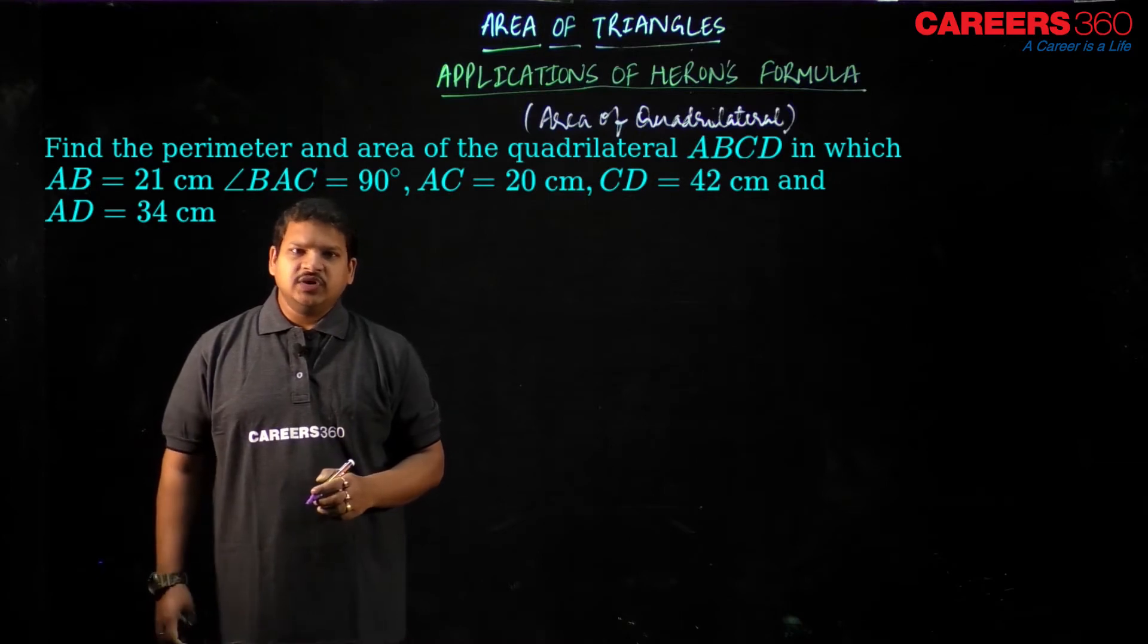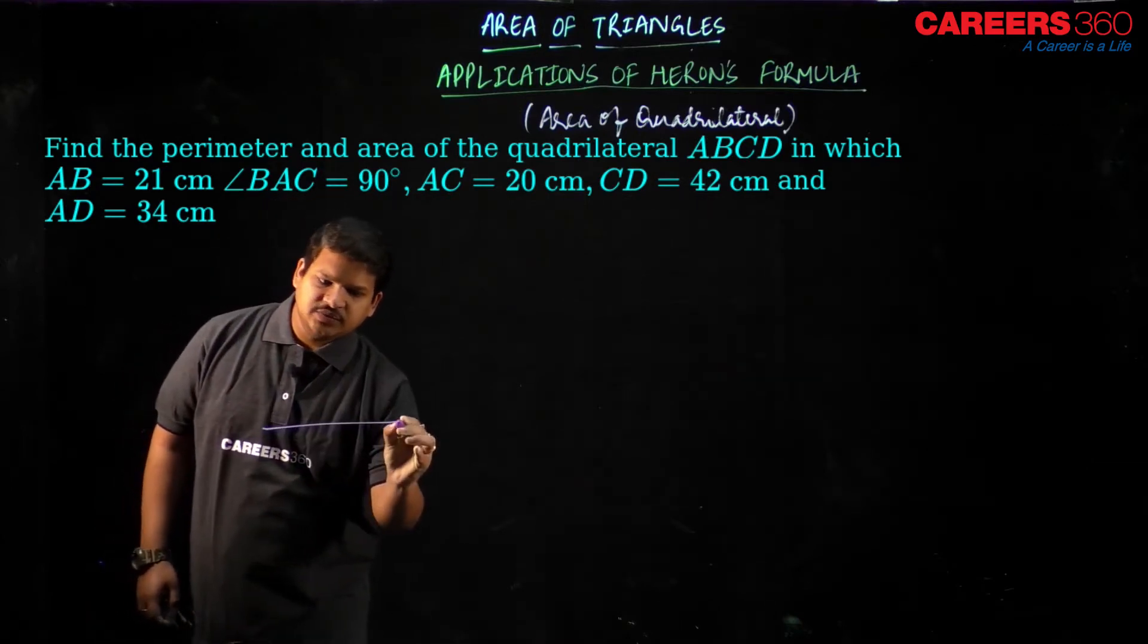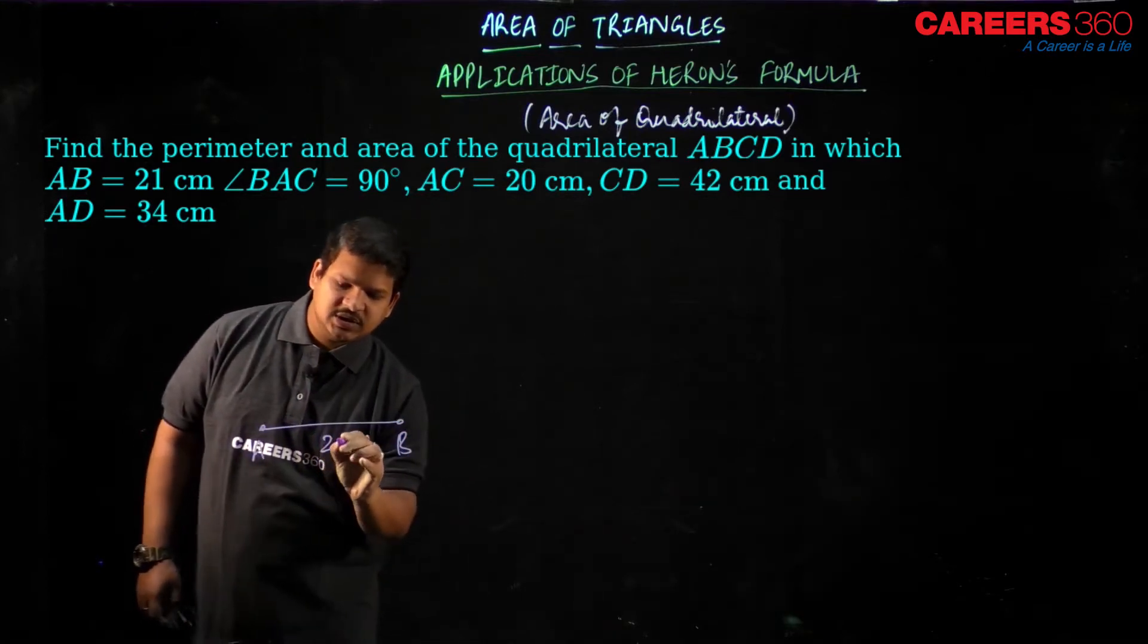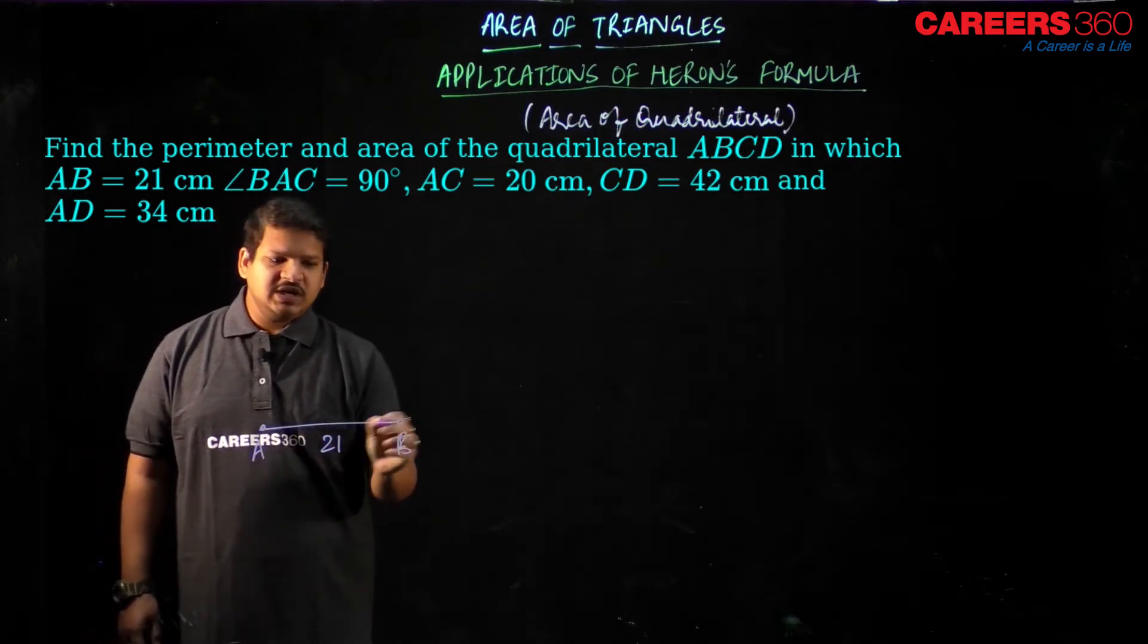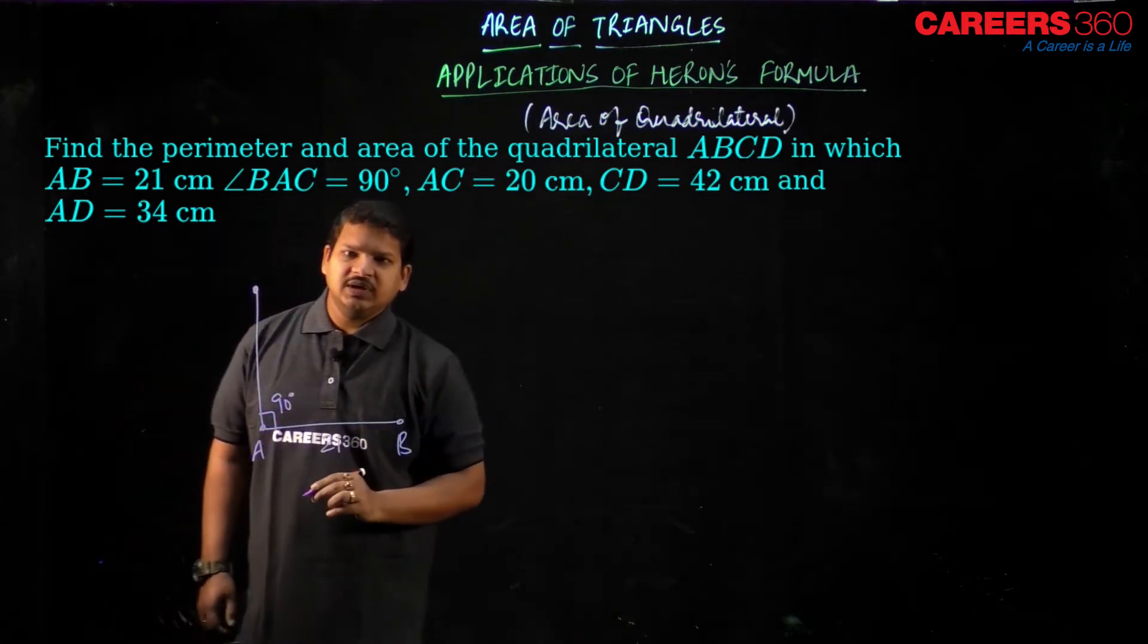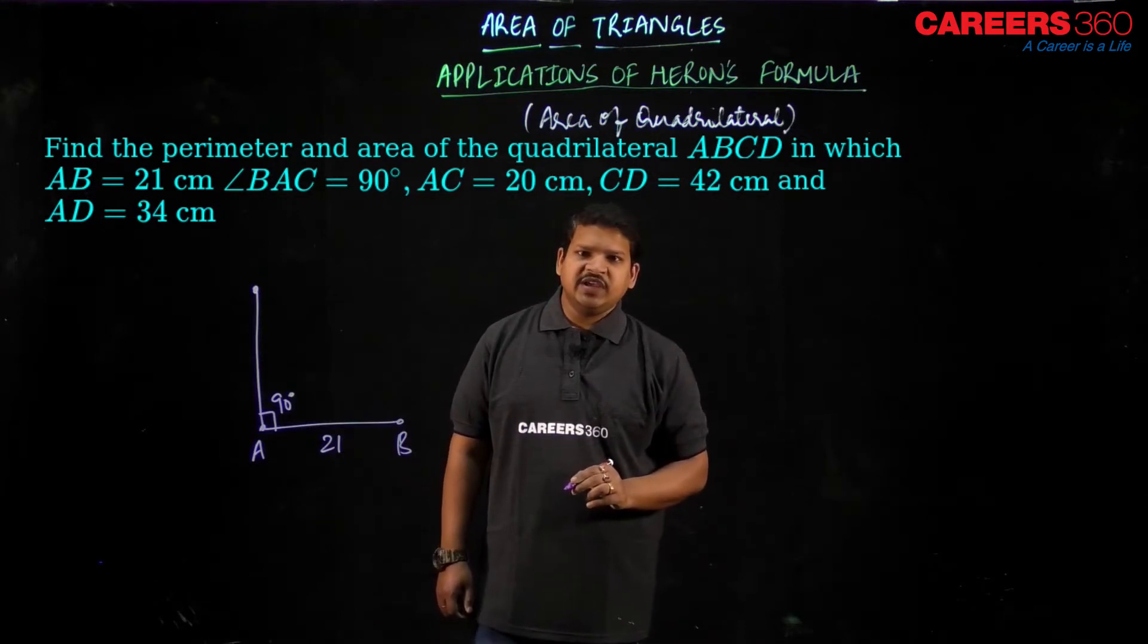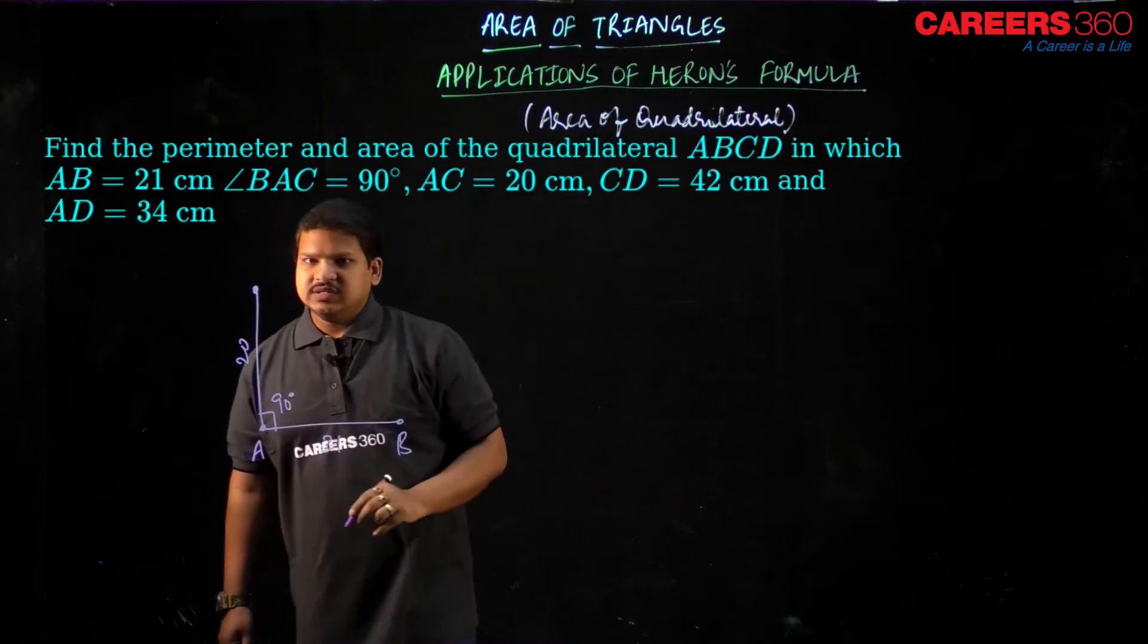Find the perimeter and the area of the quadrilateral ABCD in which AB is 21 centimeter, angle BAC is 90 degree. This angle right here is my 90 degree and then we have AC as 20, that is this length is 20.